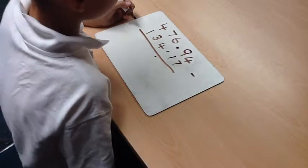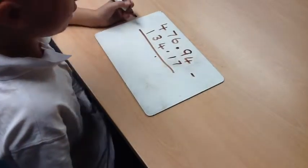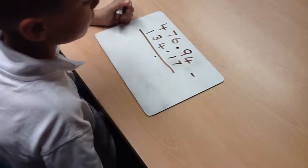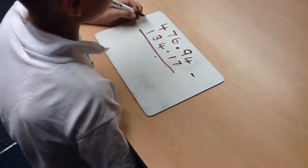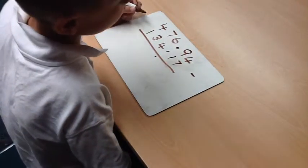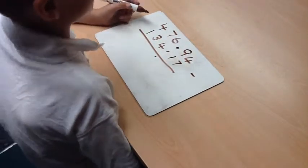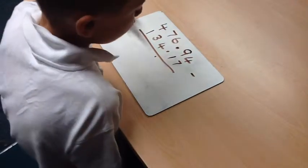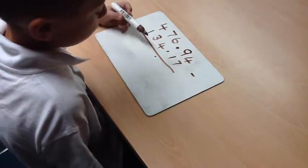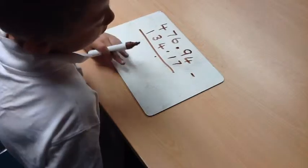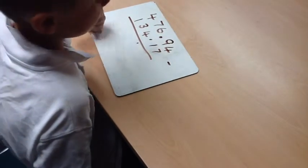Hello, and today I'm going to be teaching you how to take away the decimal number 134.17 from 476.94. Firstly, we need to make sure the decimal point is lined up, or our answer could go completely wrong. I know that it's lined up, so I can start.